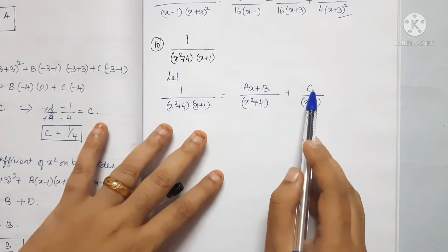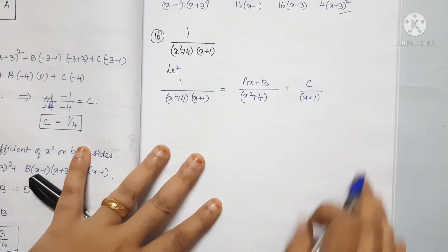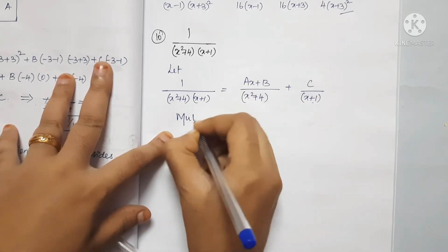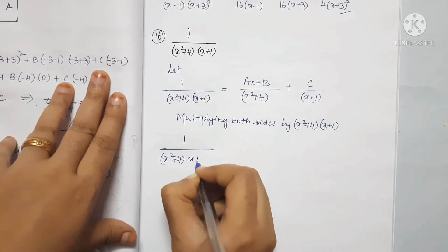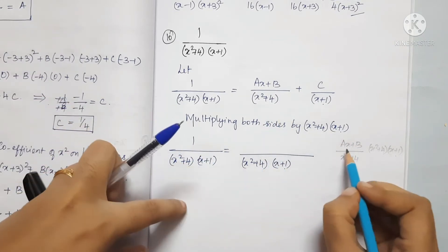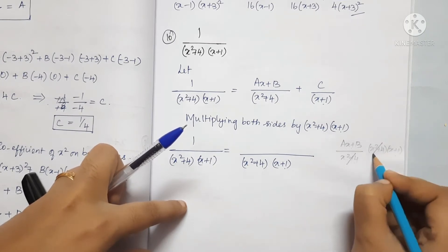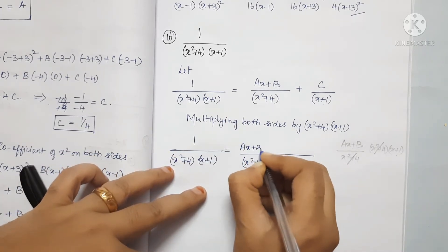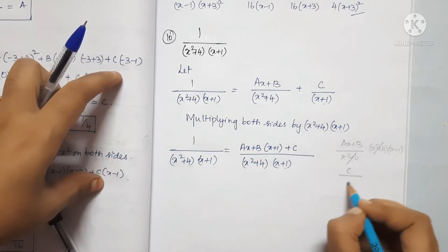Now we multiply both sides by the common denominator (x squared plus 4)(x plus 1). After cancellation, the left side becomes 1, and the right side becomes: A·x plus B, multiplied by (x plus 1), plus C multiplied by (x squared plus 4).